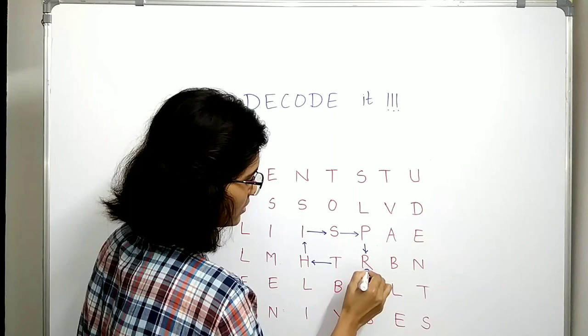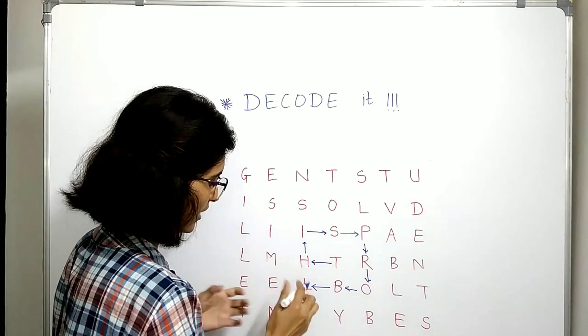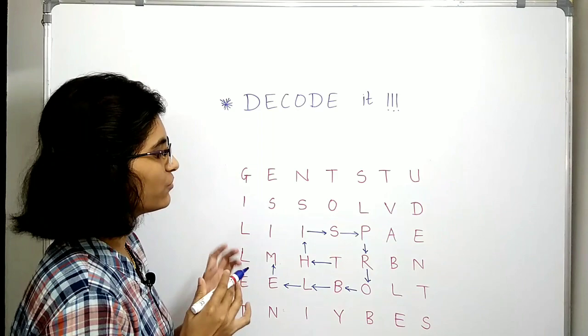So P-R-O, then B-L, then E, finally M. So we have the word 'problem', right?